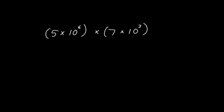Same thing again here. We've got 5 times 7 which is 35, and we've got 10 to the power of 6 multiplied by 10 to the power of 3, which is 10 to the power of 9.